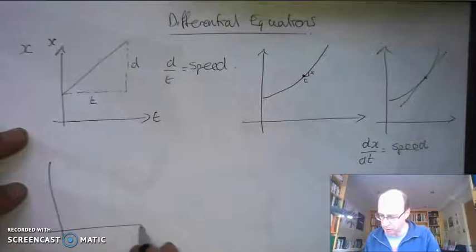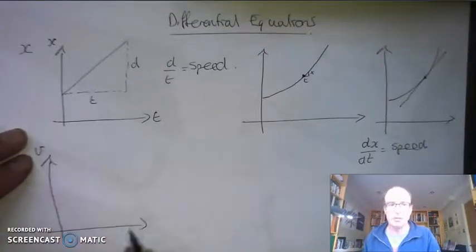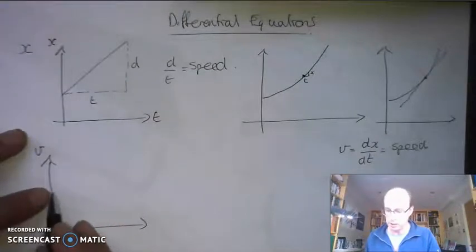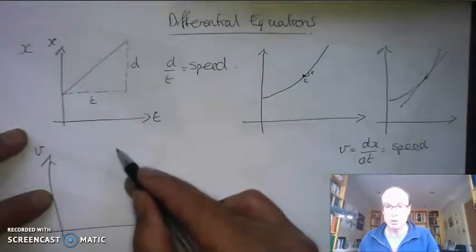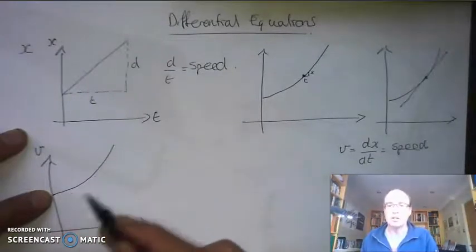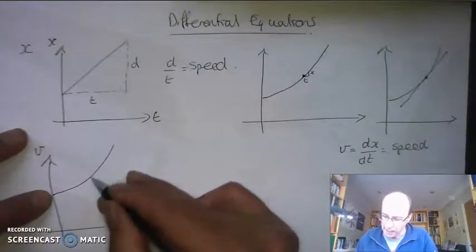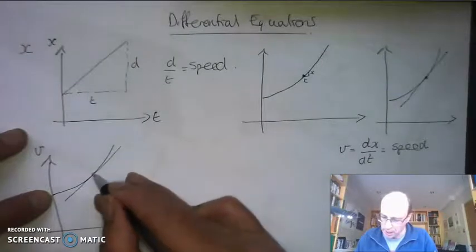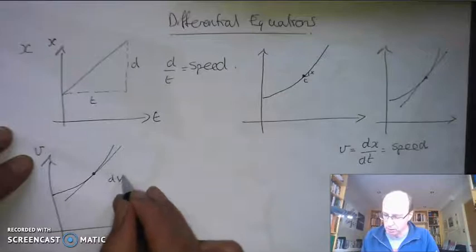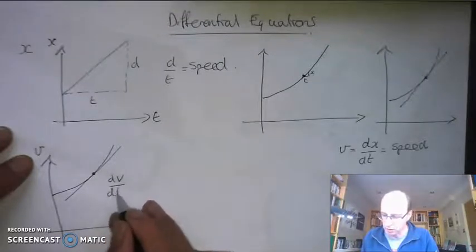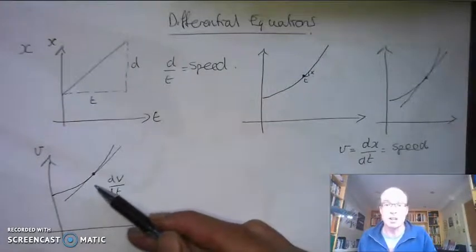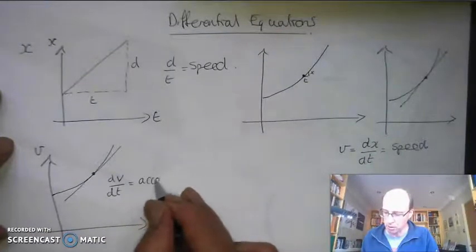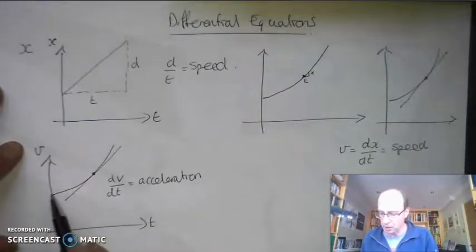Instead of plotting x, I plot v, which I'm going to use to represent my speed — my dx by dt. If I had an object travelling at a constant speed, I'd just get a straight horizontal line. With constant acceleration, I'd get a straight line pointing upwards. If acceleration is changing over time, I could again draw a tangent and work out this tiny change in v compared to a tiny change in t. That gives me the differential of my velocity, and change in velocity over time is just equal to my acceleration. So dv by dt is my acceleration.